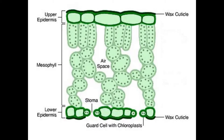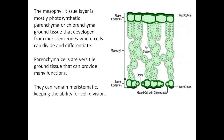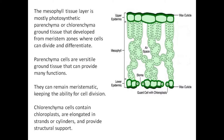Sandwiched between the upper and lower epidermis is the mesophyll tissue layer. The mesophyll tissue layer is mostly photosynthetic parenchyma or chlorenchyma ground tissue that developed from meristem zones where cells can divide and differentiate. Parenchyma cells are versatile ground tissue that can provide many functions and can remain meristematic, keeping the ability for cell division. Chlorenchyma cells contain chloroplasts, are elongated in strands or cylinders, and provide structural support.